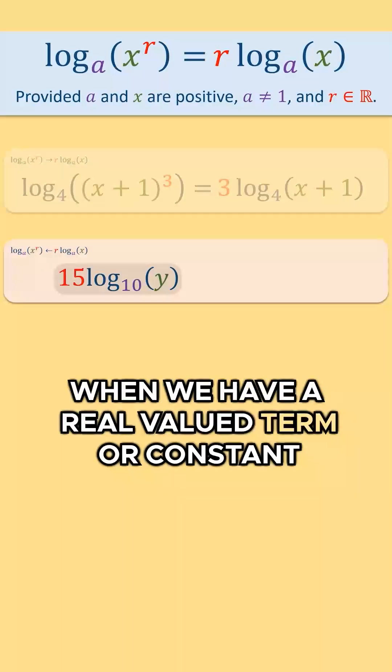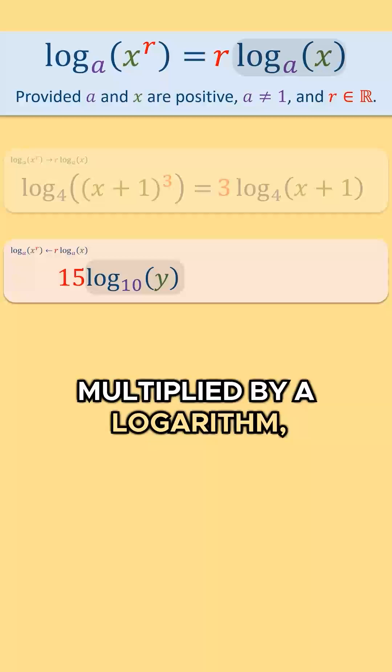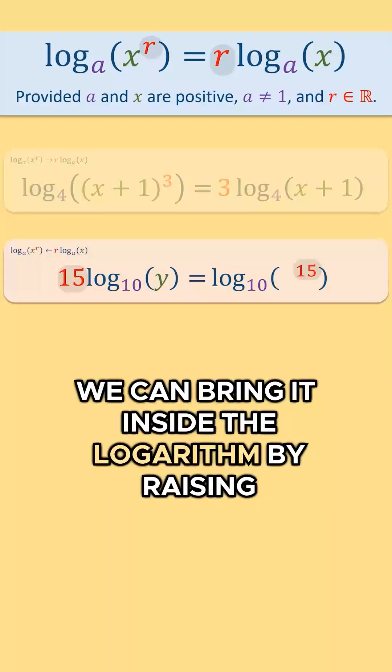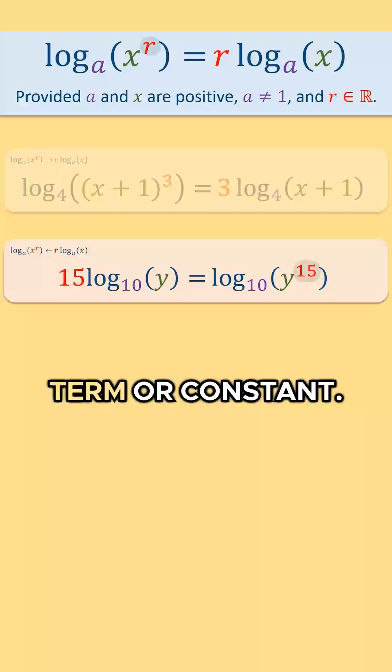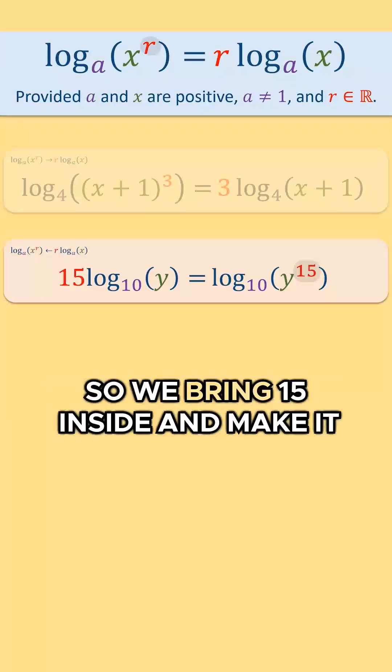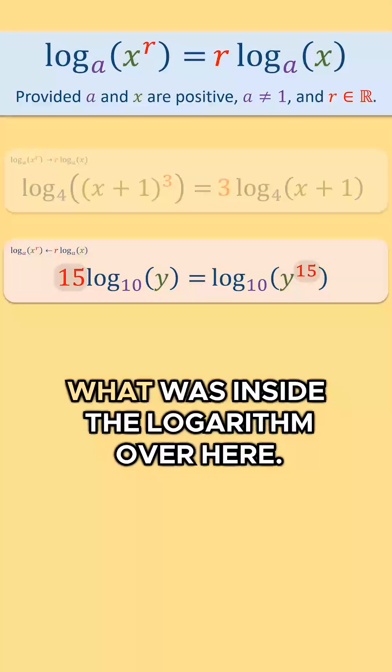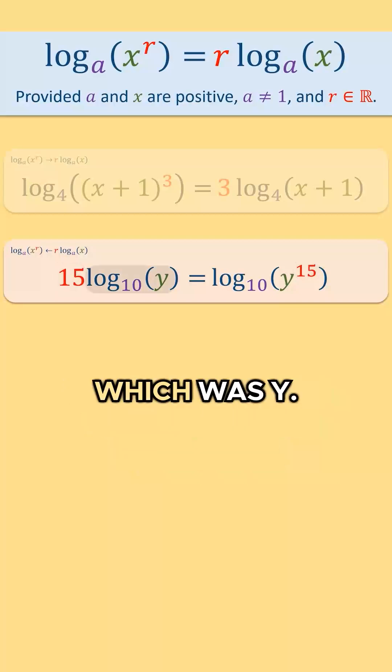When we have a real valued term or constant multiplied by a logarithm, we can bring it inside the logarithm by raising everything inside to the power of the real valued term or constant. So we bring 15 inside and make it the power of what was inside the logarithm, which was y.